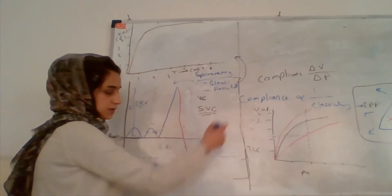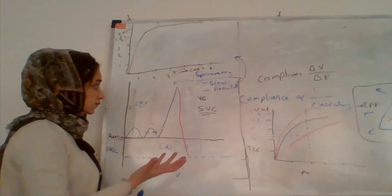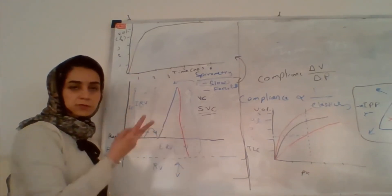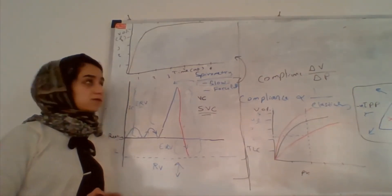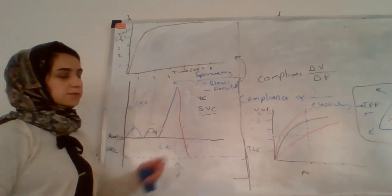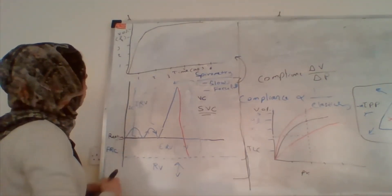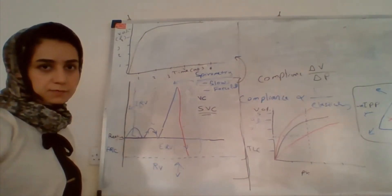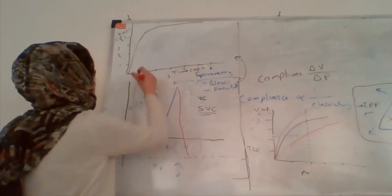We need total lung capacity and residual volume, which require a different device. For obstruction, we need to measure flow. A spirometer measures both volume and flow. By looking at how rapidly the air empties from the lungs during forceful expiration — using the volume-time relationship — we can assess airflow. Most of the air that expires will expire in the first second during forceful expiration.